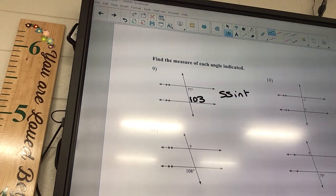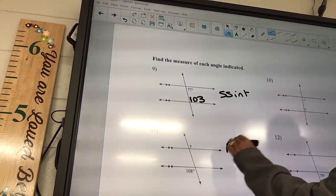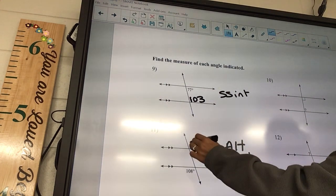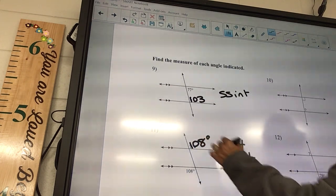Number 11. Where's the question mark, inside or outside? Outside. What about the 108? Outside. So these are going to be alternate exterior. Are they equal or add up to be 180? They're equal, so if this is 108 then this has to be 108 degrees as well.